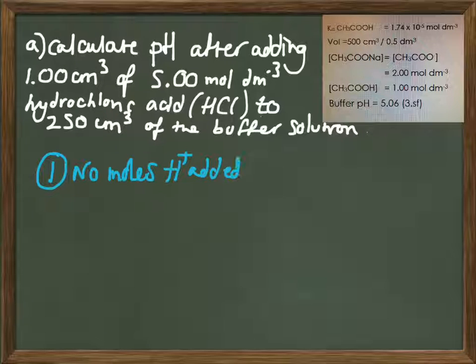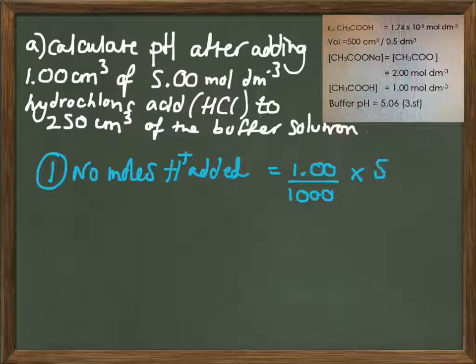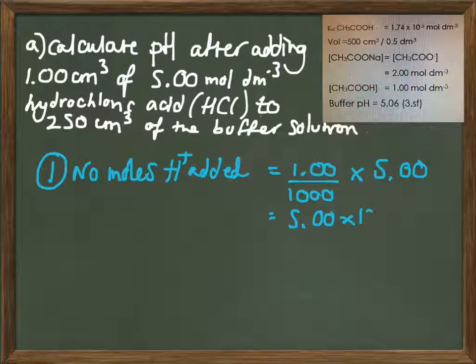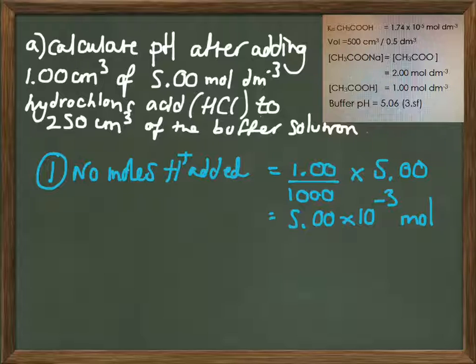The first thing we want to do is work out how many moles of protons are added. We can assume that because it's HCl it's all going to dissociate and ionize, making H+ ions in solution. If we have 1 centimetre cubed divided by 1000 to get it into dm cubed, then multiply by the concentration, that gives us 5 times 10 to the minus 3 moles of protons floating around in the water. They'll probably be floating around as H3O+ as I'm sure you're all aware.